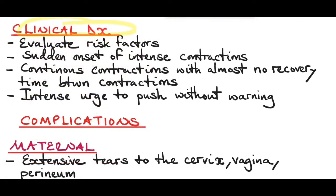So how do you make a clinical diagnosis of a precipitate labor? First of all, it's important to evaluate each patient for the risk factors of having a precipitate labor. Risk factors like cervical incompetence, small baby, and history of precipitate labors should help you prepare that this patient might have a precipitate labor in the current pregnancy.